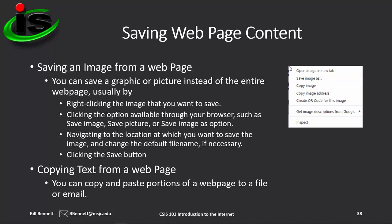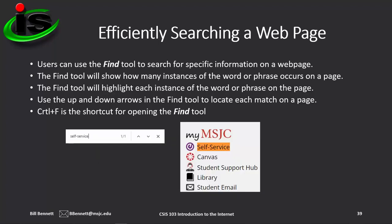Copying text from a web page is quite easy — just select across the text and press Control-C, or right-click on the selected text and choose Copy. When viewing a web page, you can use the Find tool to search for specific information. Use Control-F as the shortcut to open the Find tool, type in your keyword, and it will identify how many instances of that keyword occur on the page. Using the Find tool's up and down arrows, you can navigate to each occurrence, and the keywords are also highlighted within the web page.